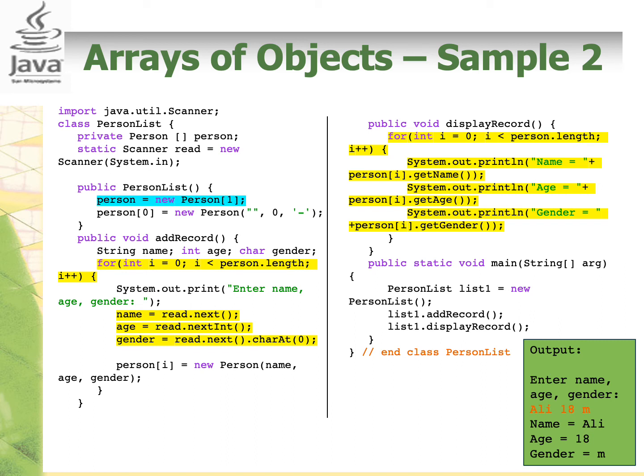Try and run the code and see if you get the same output if you enter name, age, and gender as Ali, 18, and M. You can also change the size of the array — here I put the size as 1, so that's why it only asks for one name, age, and gender.